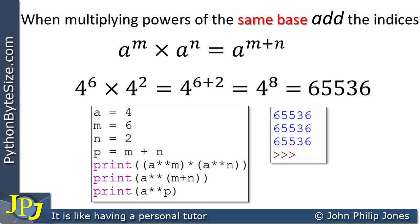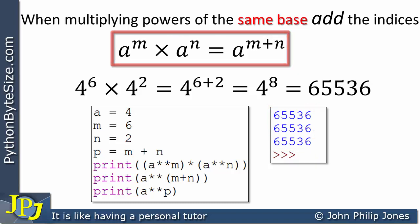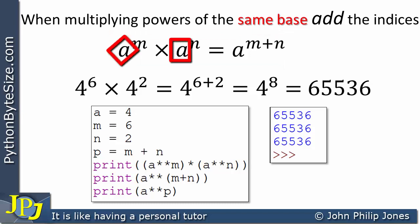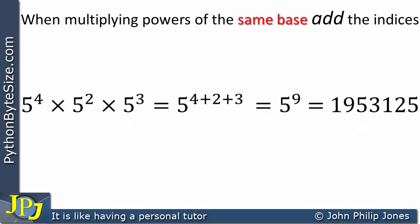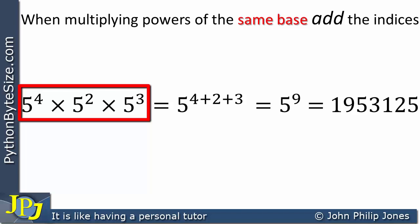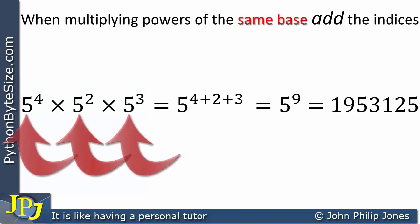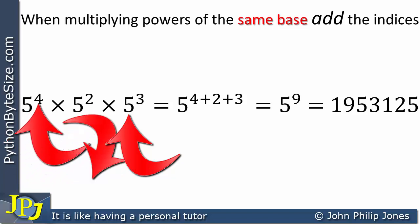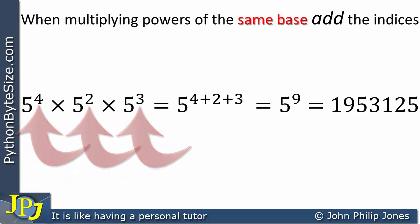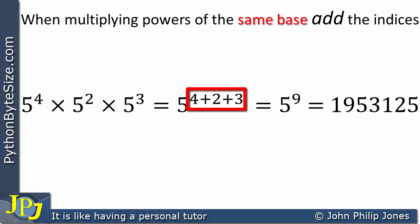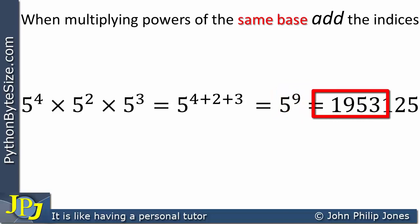I've used two Python programs to show that this is correct. It's important to emphasize this applies to the same base. Let's look at one more example without a Python program. Here I have 3 numbers raised to a power, and in every case the base is 5: 5 to the power 4, 5 to the power 2, and 5 to the power 3. We add all of these together — 4 plus 2 plus 3 is 9 — so this becomes 5 to the power of 9, and when you work that out with a calculator you will get the resulting number.